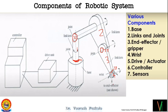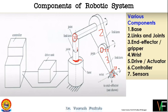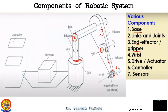The end effector is linked to the wrist and is the last portion that either grabs things or has a tool attached — such as a welding tool or a paint spray. Whatever job you want to do is connected to this end effector or wrist portion. The gripper, which you can think of as your hand, allows you to grip things similarly.